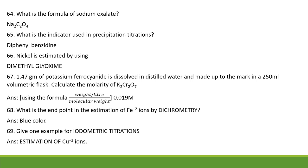What is the indicator used in precipitation titrations? Diphenyl benzidine. Nickel can be estimated using DMG, which is called dimethylglyoxime. What is the end point in estimation of Fe²⁺ ions by dichromatometry? Appearance of blue color. Give an example of iodometric titrations: estimation of copper ions, Cu²⁺ ions.